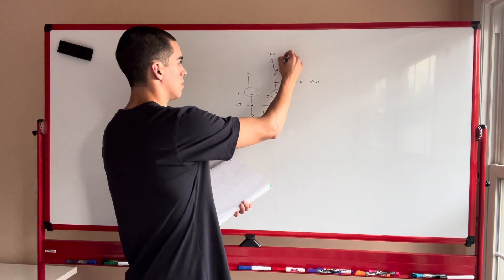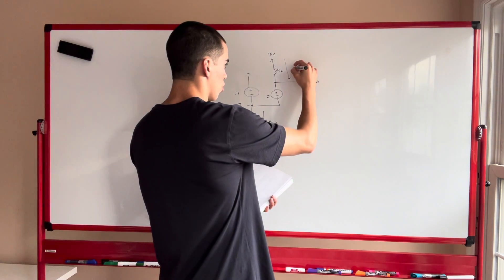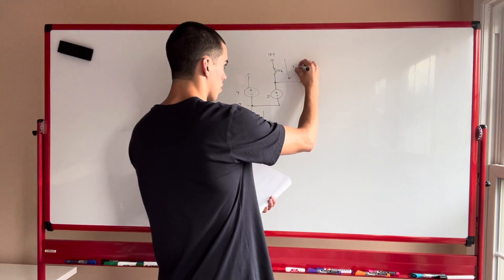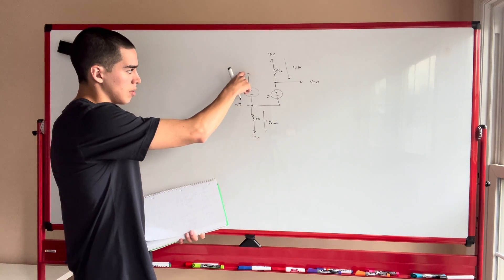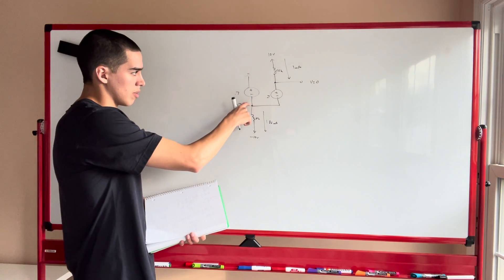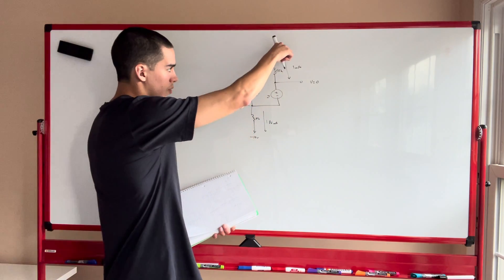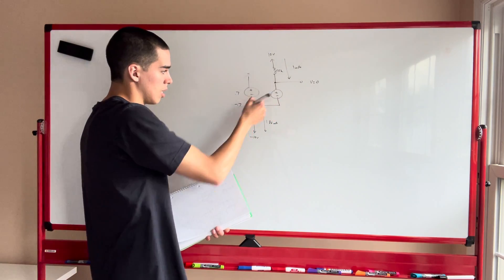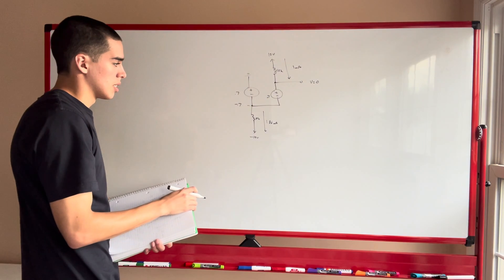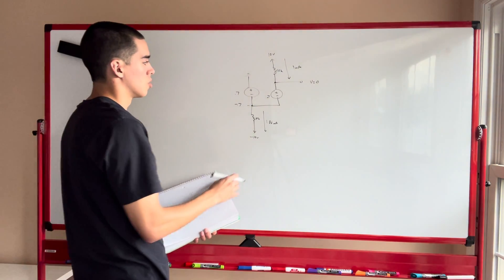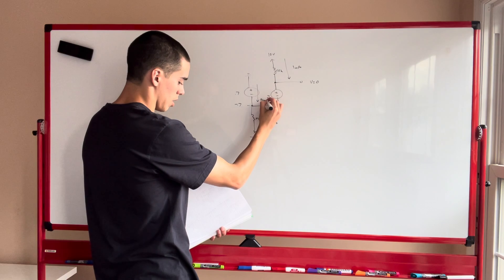That means there's a current going through here of 10 volts divided by 10 kilohms, which is 1 milliamp. So we go from ground to negative 0.7, back up to zero. We have 1 milliamp in and 1.86 milliamps out, so that would require 0.86 milliamps flowing this way.